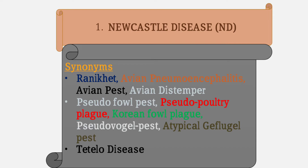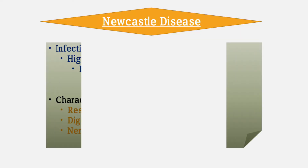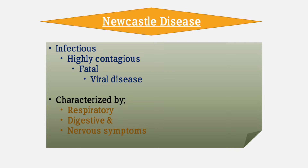Newcastle disease is a highly infectious, contagious, and fatal viral disease which is characterized by respiratory, digestive, and nervous system symptoms — meaning it mostly affects these three body systems.